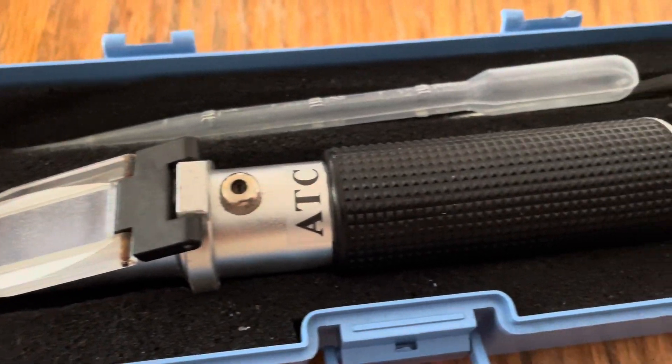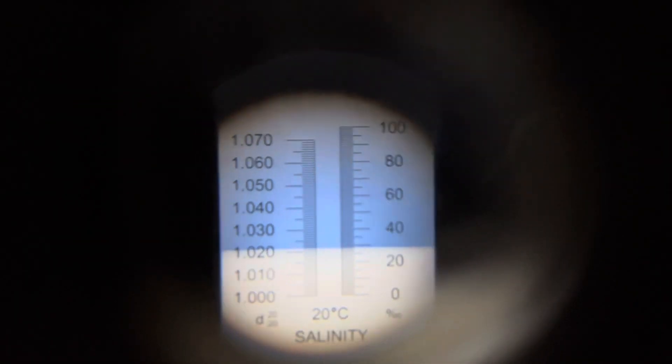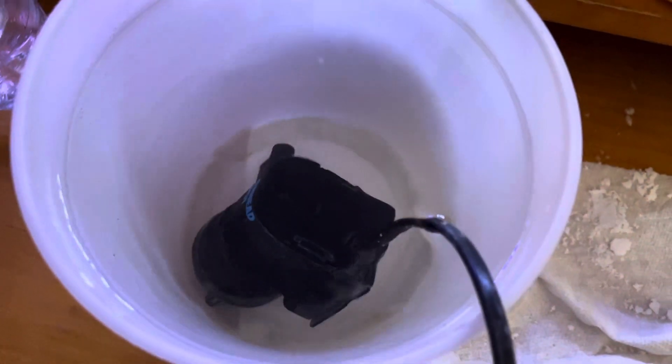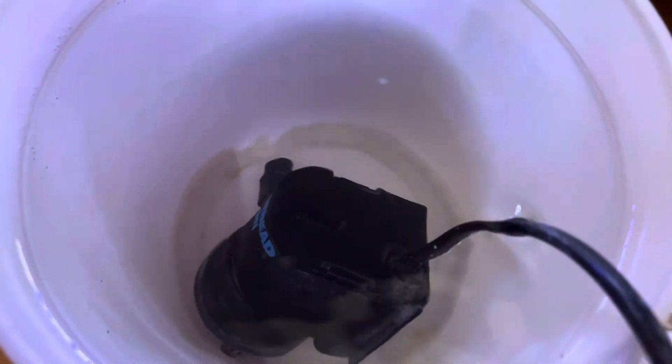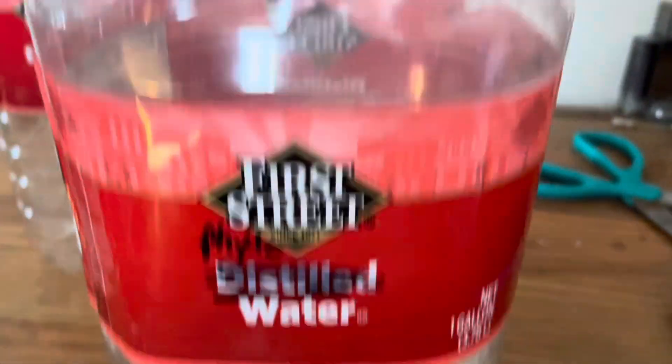Using a refractometer I measure the salinity and try to keep it around 1.021 to 1.023. Once it's thoroughly mixed you can then add it to your water storage container. Here I'm just using an old distilled water jug that I've relabeled.